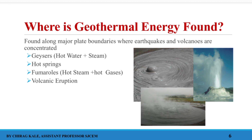The sources of geothermal energy include hot water springs — they are found in our close vicinity at places like Vajreshwari or Sativali. There are hot geysers, which are a combination of water plus steam. A hot spring is just hot water. A fumarole is hot steam plus hot gases, which can include harmful hydrogen sulfides. Volcanic eruption is also a source — active volcanoes in the form of magma. These are the few major sources of geothermal energy.